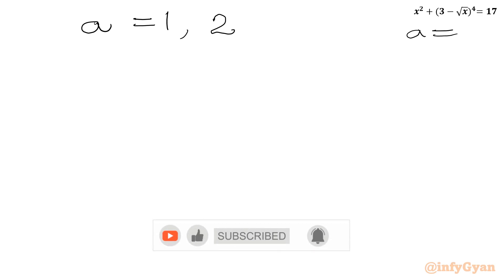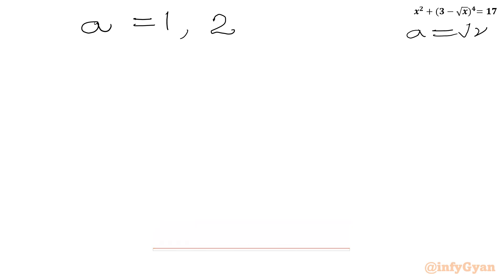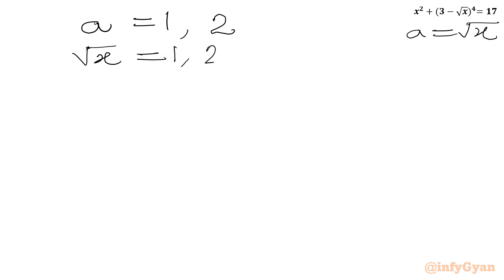Our substitution was a equals √x. So √x equals 1 or √x equals 2. Squaring both sides, we get our solutions: x equals 1 or x equals 4.